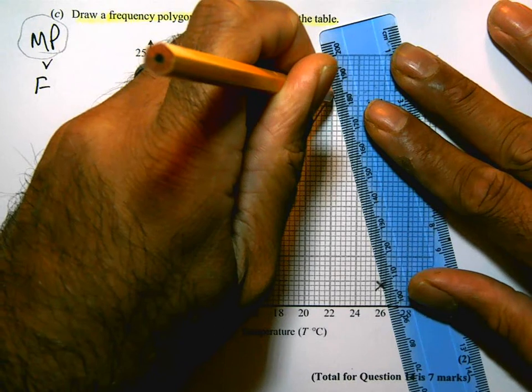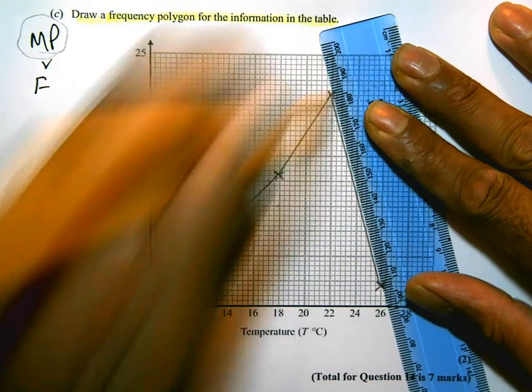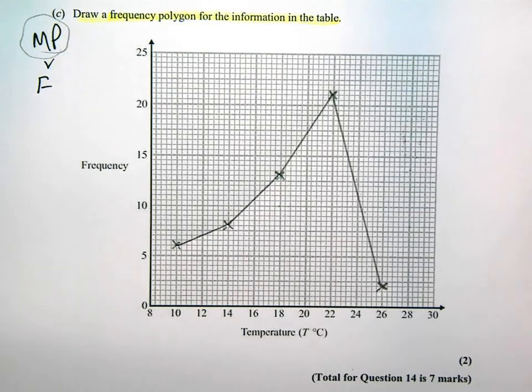And there you have it. That is your frequency polygon for this part of the question. And there's 7 marks up for grabs in this whole question. This question takes a bit longer than normal, but it's just that you need to check and recheck. And it is a pretty straightforward question that can gain you a lot of marks. So, take your time, make sure you can do it, and get all the marks in it.